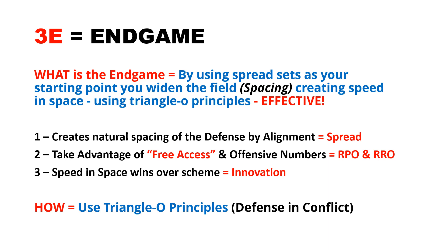Third is the end game. What we want to do is create spacing, because speed and space wins every time — this helps us be effective in whatever we're doing. It creates natural spacing of the defense just by alignment. We want to take advantage of free access and those offensive numbers using run-pass options and run-run options. We can simply be innovative by providing speed and space, because that wins over scheme. We'll use our triangle principles to put the defense in conflict and set ourselves up for success.